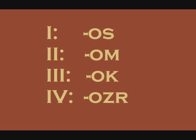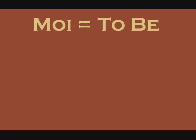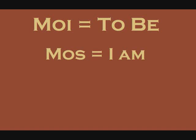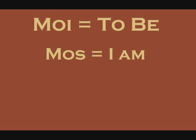Now you have all the tools to conjugate any verb in the present tense. Let's start with MOI, to be. First person: MOS means I am. Second person: MOM means you are.